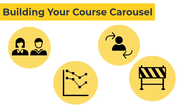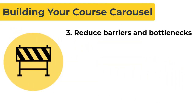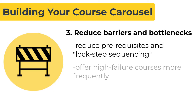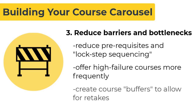Next, consider some of the unnecessary barriers or bottlenecks that keep students from persisting. Re-evaluate your curriculum and consider reducing prerequisites and lockstep sequencing so that students are able to take a wider range of core courses earlier on. Look at courses that have high failure and withdrawal rates and are likely to need to be repeated. Identify those bottlenecks and build buffers of lighter or more engaging courses to allow students time to repeat their requisite courses.